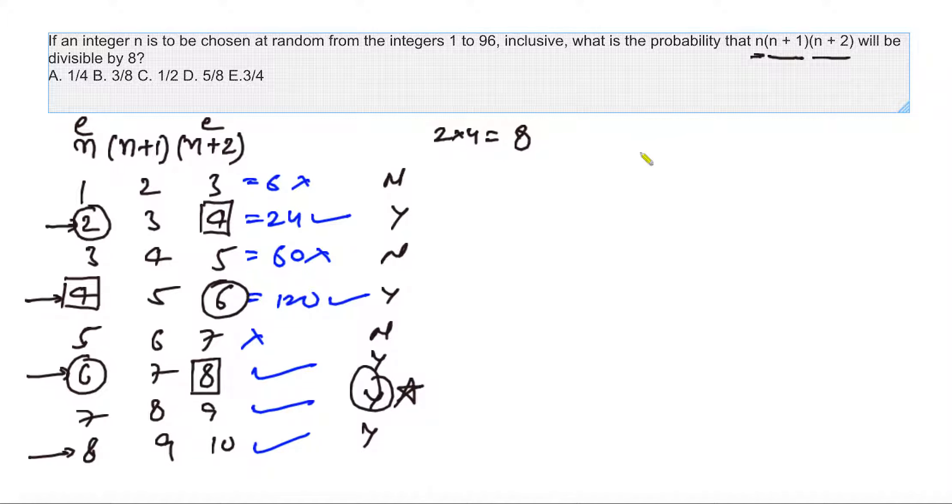That means out of 96 values that we have to choose from, if I choose any even value, I can be certain that the answer will definitely be yes. Half of them will be even, so 48 will always give me the answer yes.